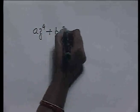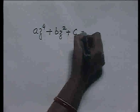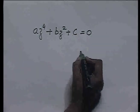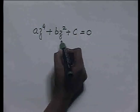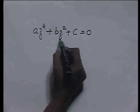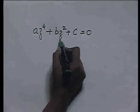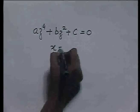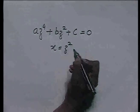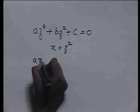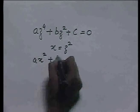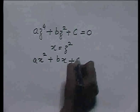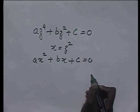For example, we saw that an equation of the form a·z⁴ + b·z² + c = 0 can be reduced to quadratic form by the simple substitution x = z². And this equation then becomes a·x² + b·x + c = 0, which is of quadratic form.